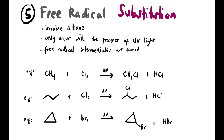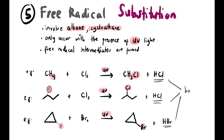Free radical substitution usually involves alkanes or cycloalkanes, and only occurs in the presence of UV light, involving free radical intermediates. In every example shown, there is UV light present — CH4 and other alkanes with no other functional groups. All the hydrogens in each structure are replaced by halogens, with by-products. Remember: UV light + alkane = free radical substitution.